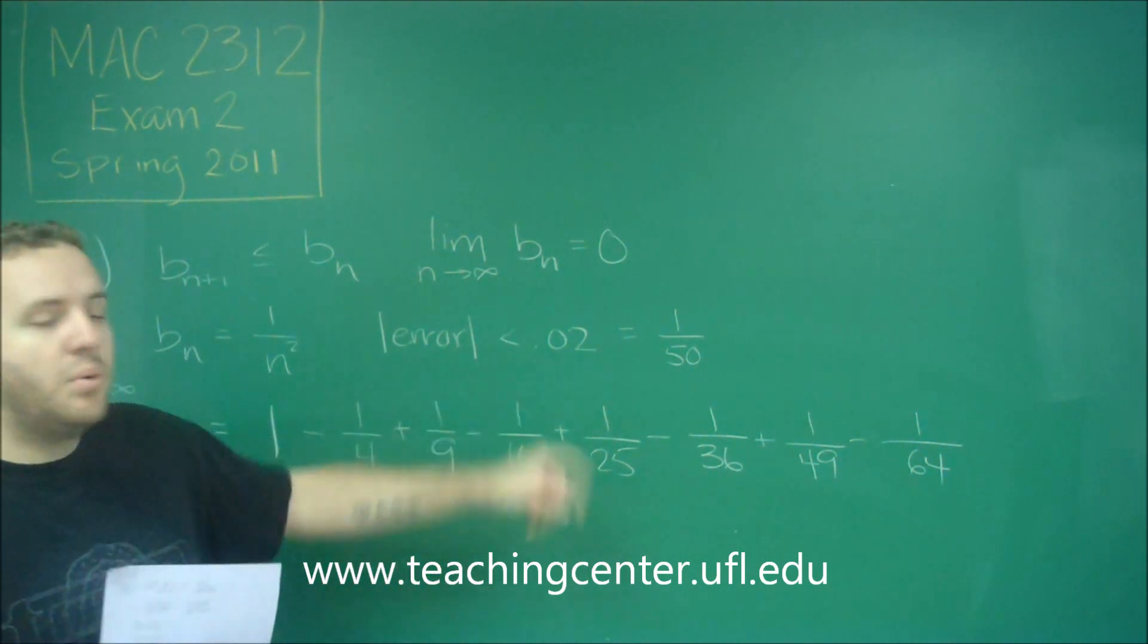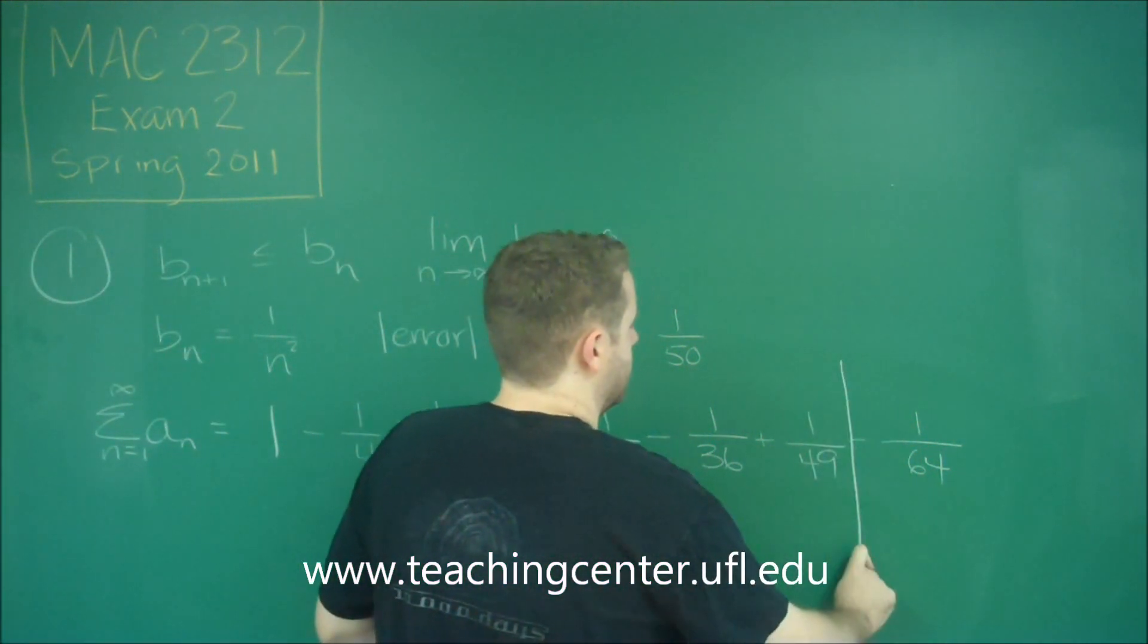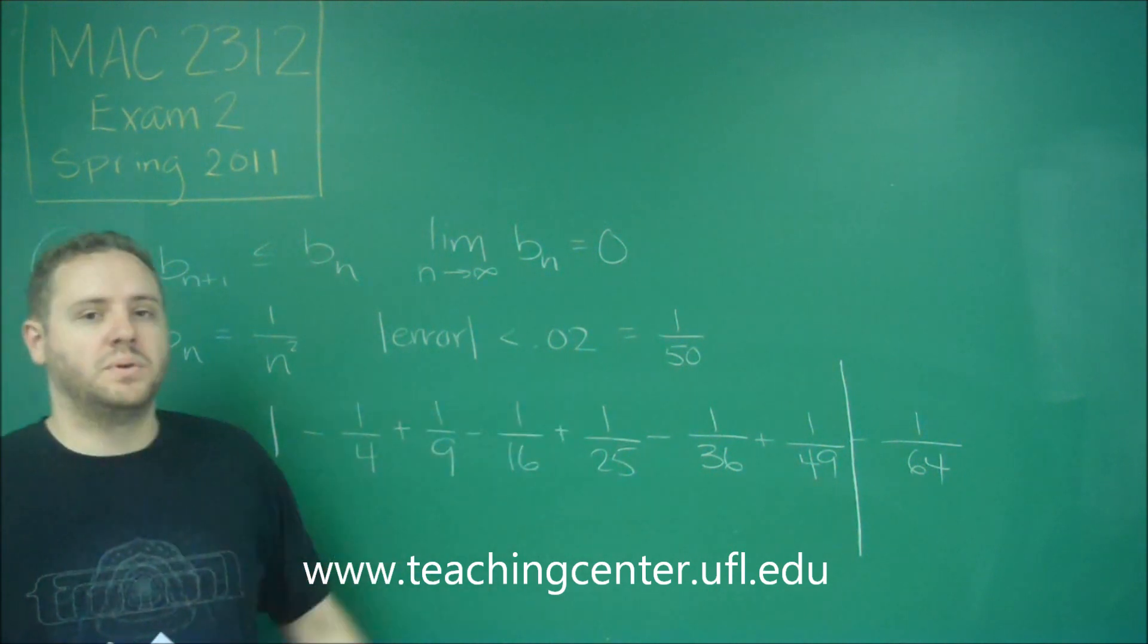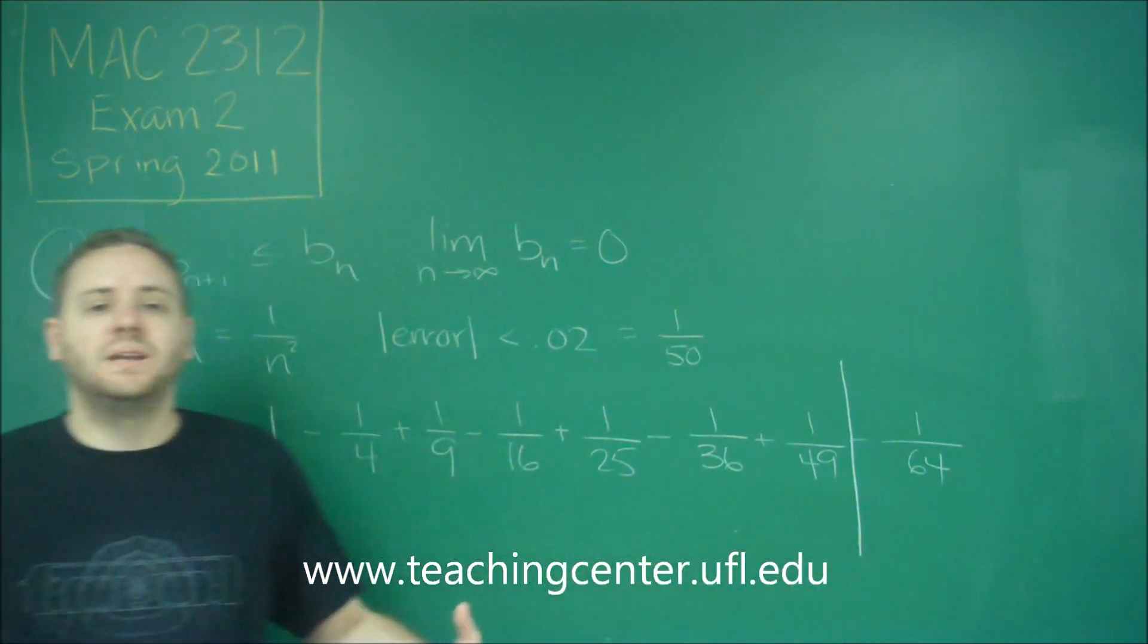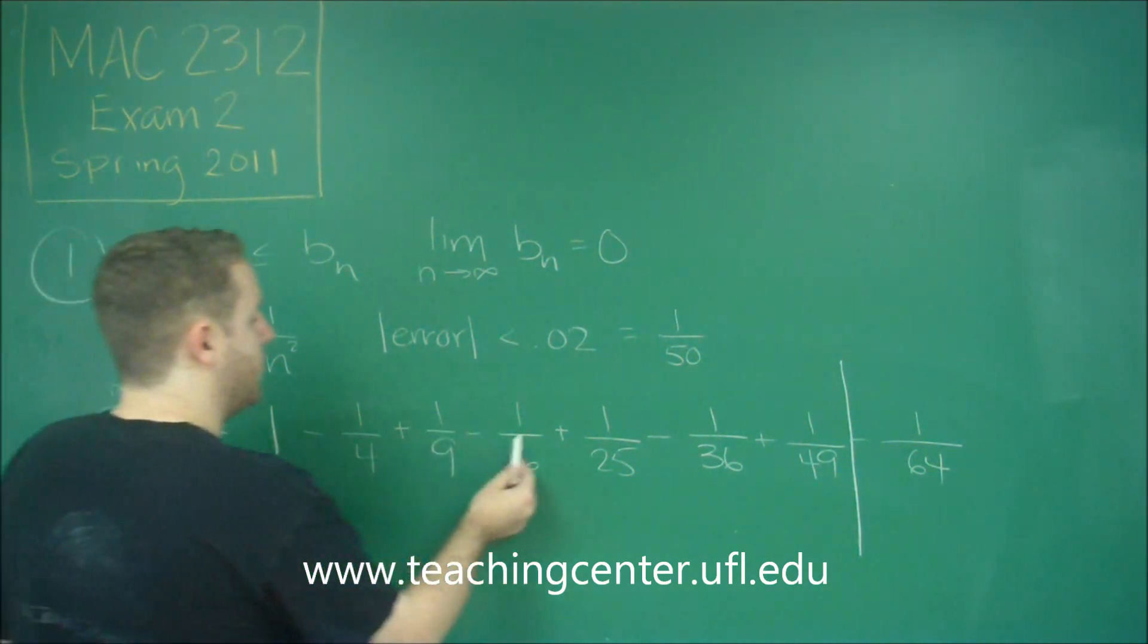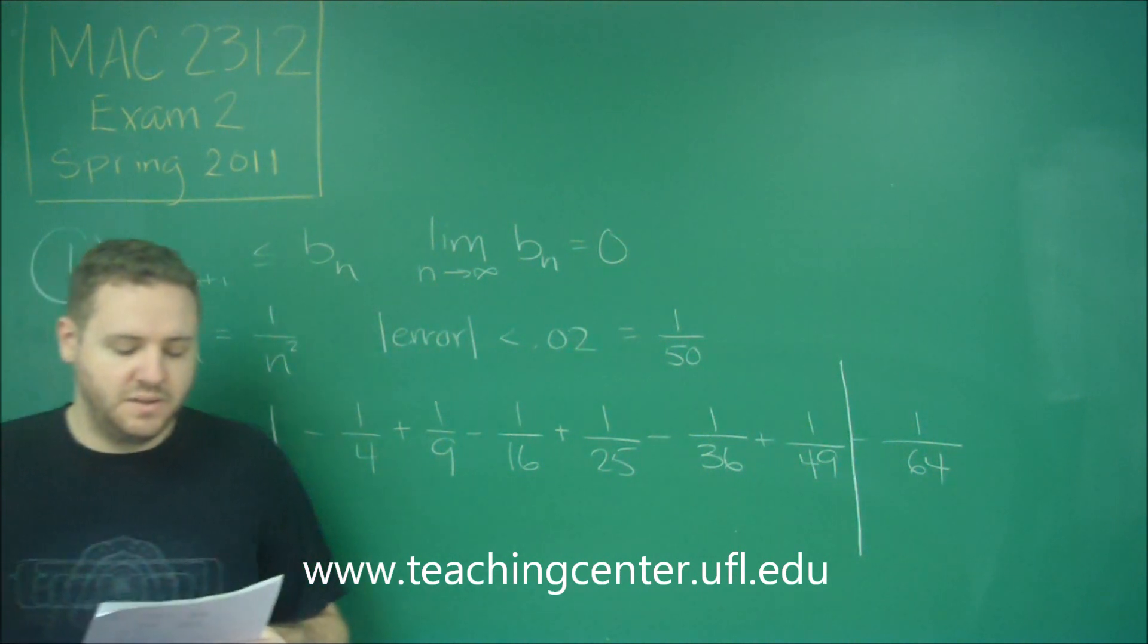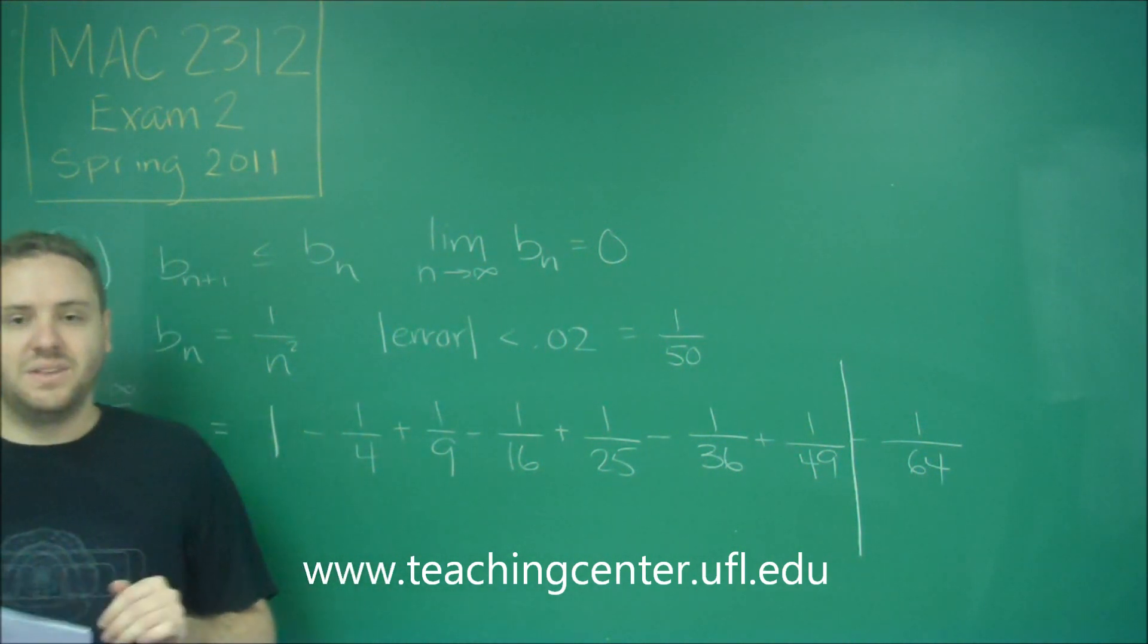So to get within 0.02 of our sum, we only need to go to here because everything else is going to be less than 0.02. So if we just added these terms, we would get within 0.02 of the actual sum. So, how many do we have? Because the question is just how many terms do you need? 1, 2, 3, 4, 5, 6, 7. So you would need 7 terms of this series to get a sum that's within 0.02 of the actual sum.